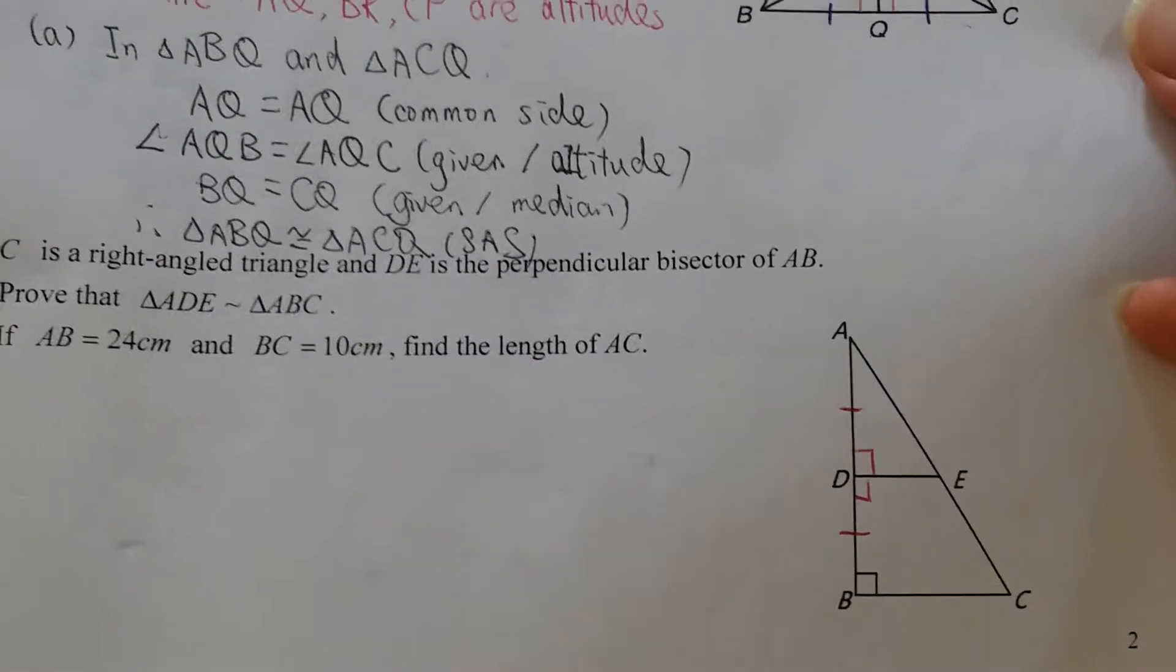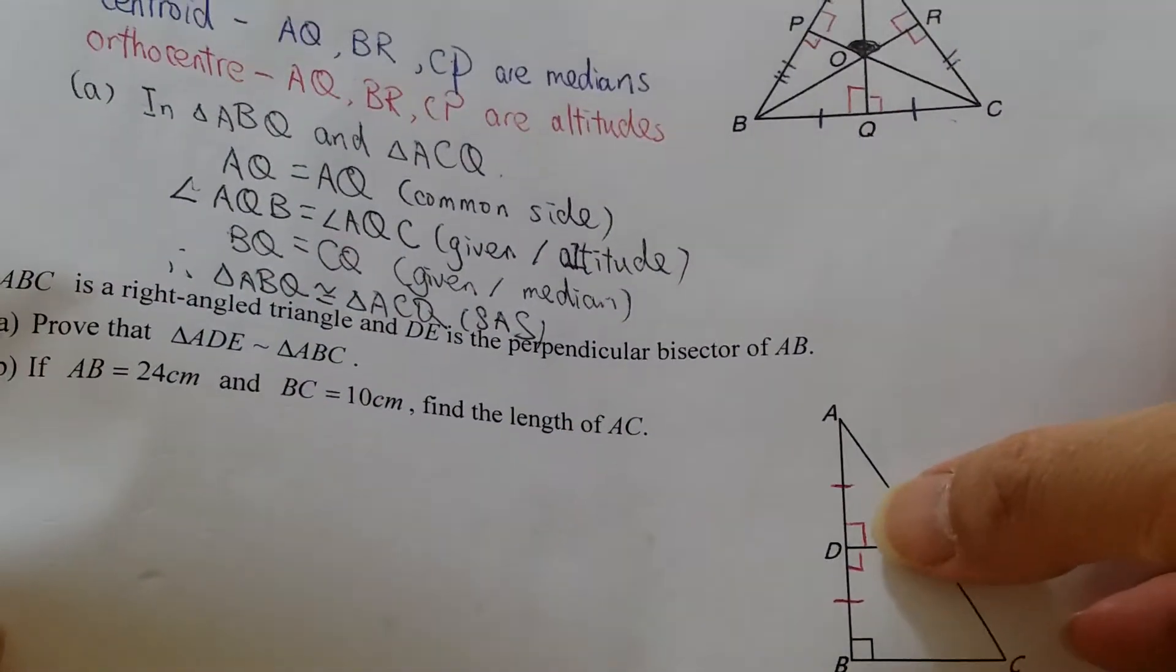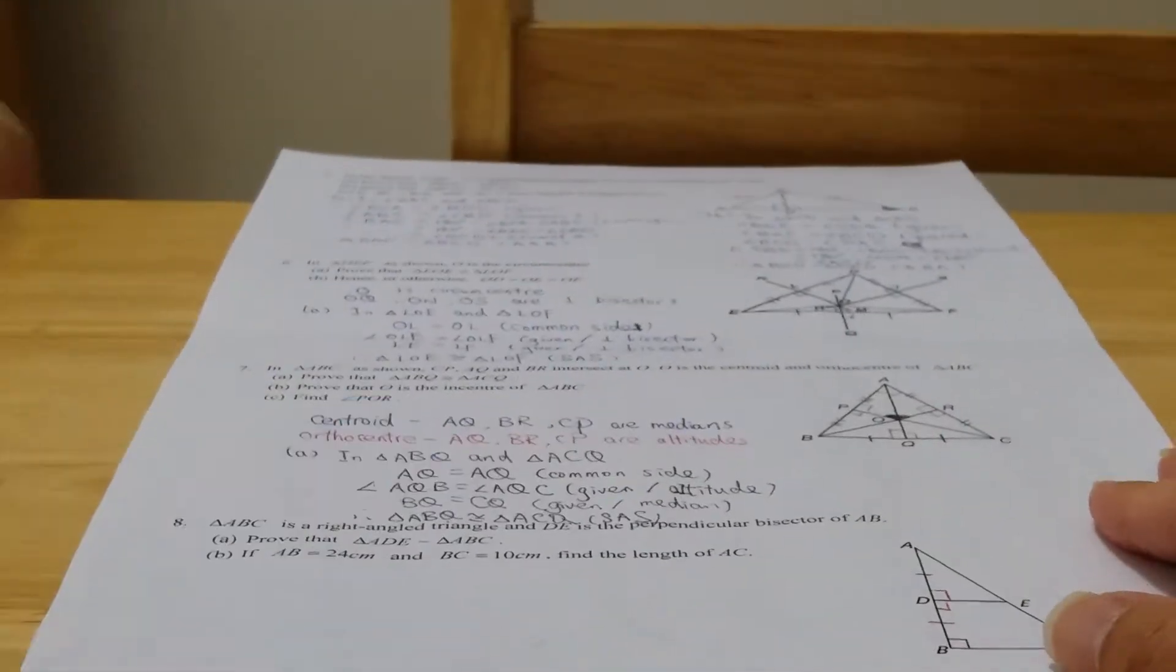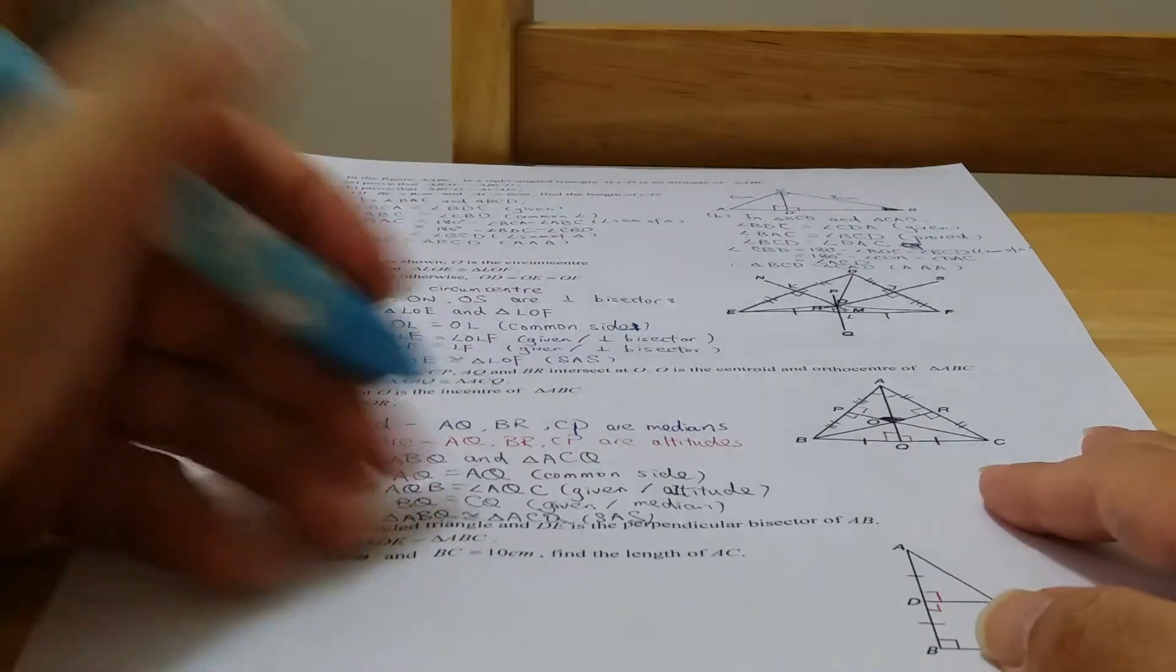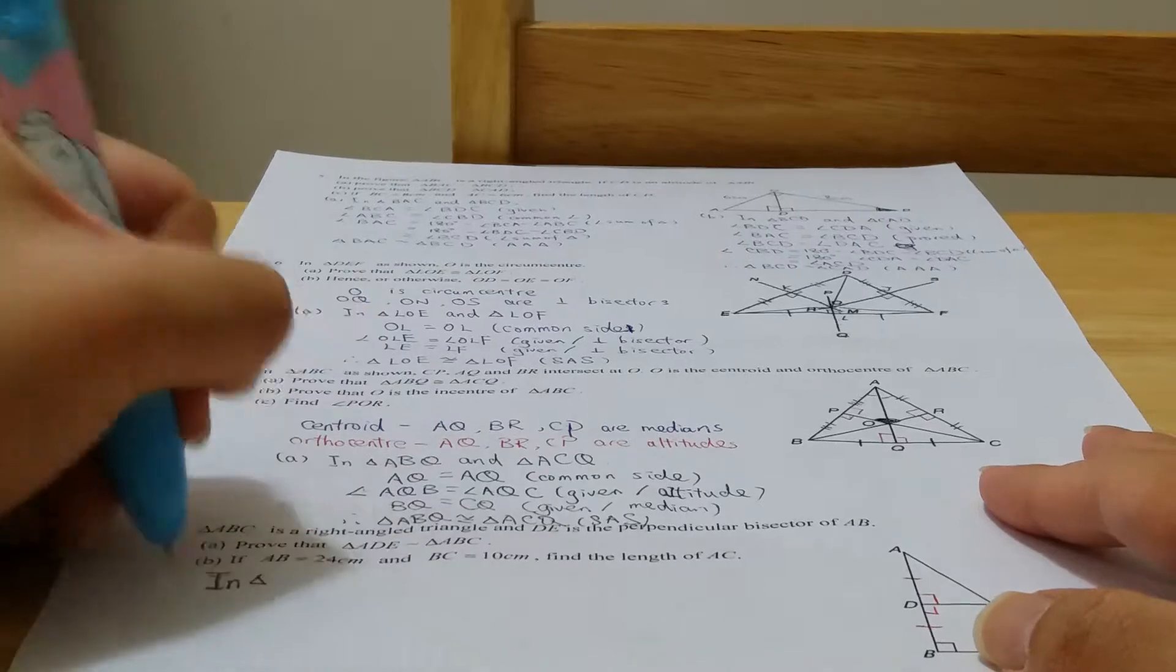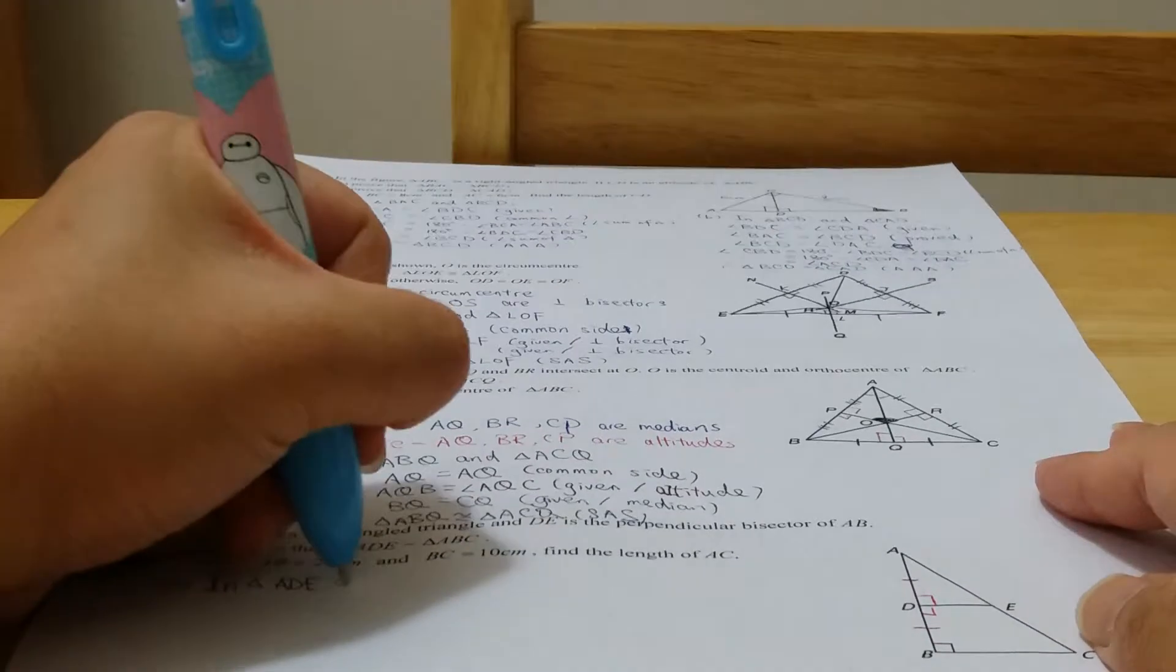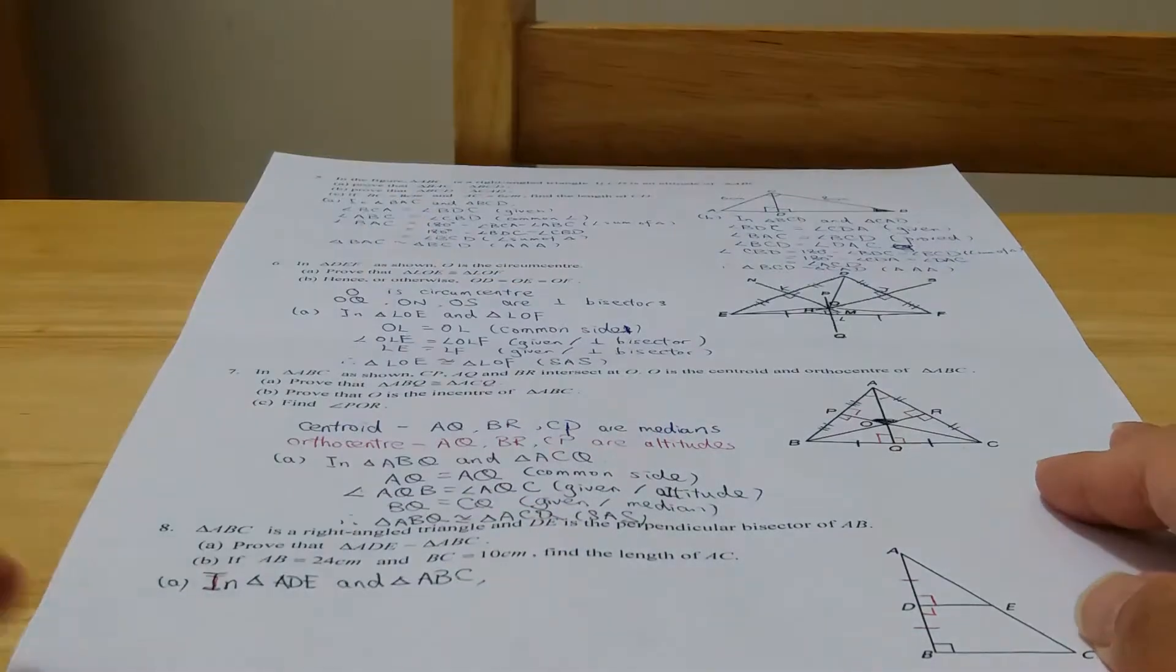This time we are going to prove that they are similar. So it's so easy for you because first of all we have the right angle here and also we have the common angle here. So we can write down the answer immediately. In triangle ADE and triangle ABC. Okay, we have these two.